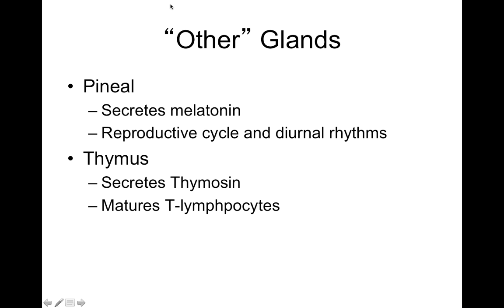Finally, the other glands: the pineal gland secretes melatonin and functions in our circadian rhythm and reproductive cycle. The thymus releases thymosin, which matures our T lymphocytes — part of our immune system. That was a pretty quick introduction to all those hormones.